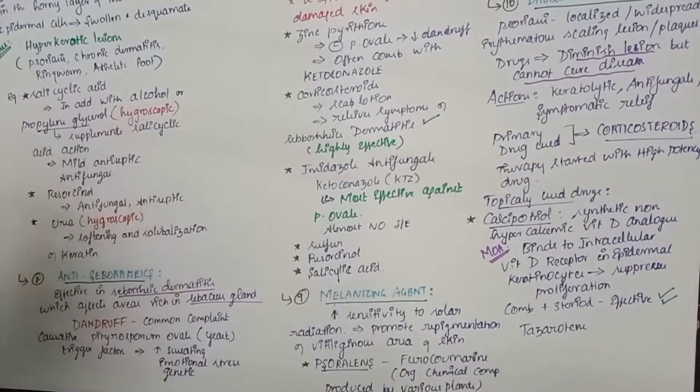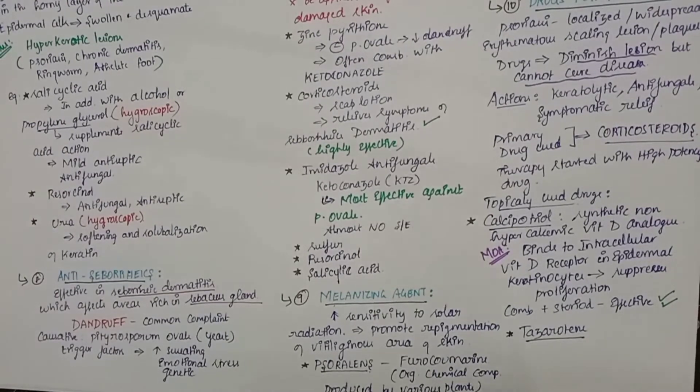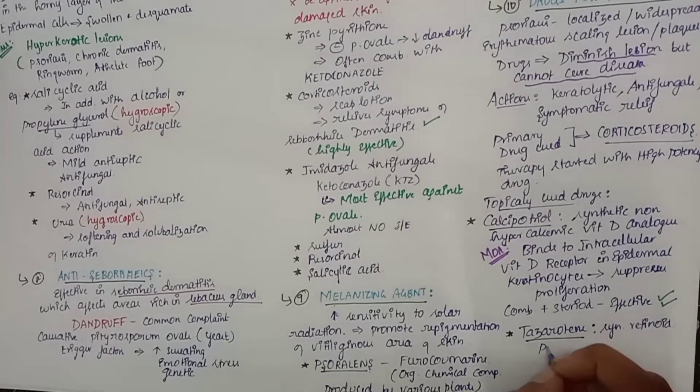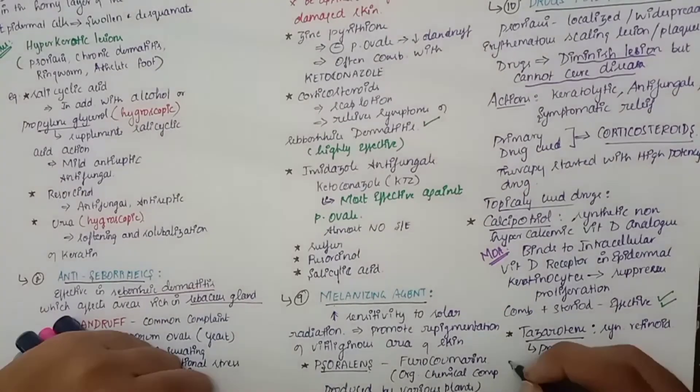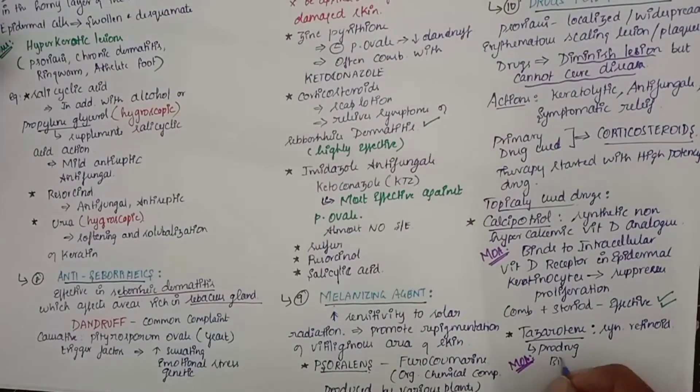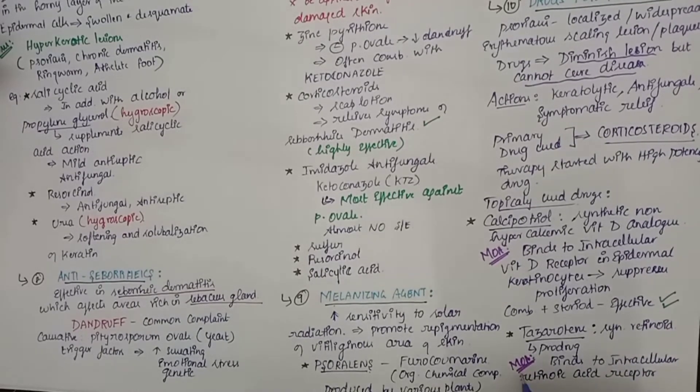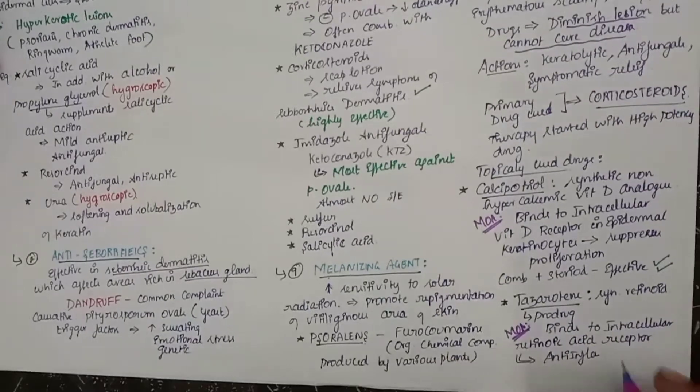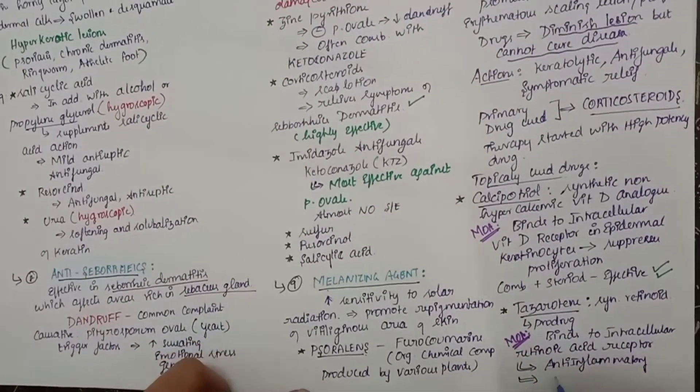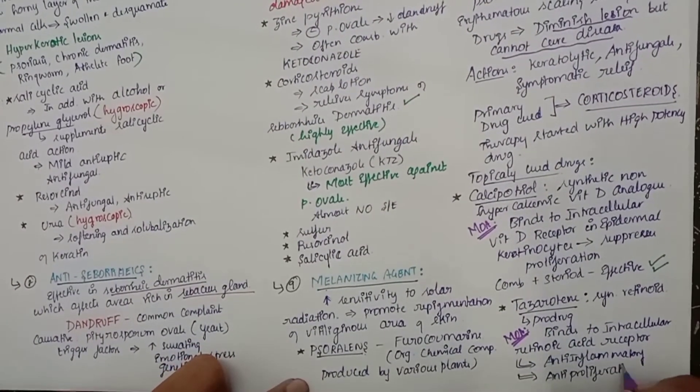The next drug is tazorotene. This is a synthetic retinoid and it is also a prodrug. The mechanism of action is it binds to the intracellular retinoic acid receptor. So it offers an anti-inflammatory effect and also has an anti-proliferative effect. The drug named coal tar is also used in psoriasis.